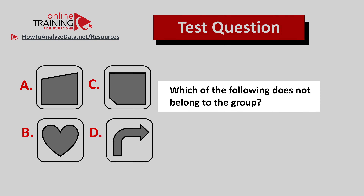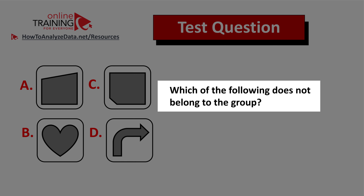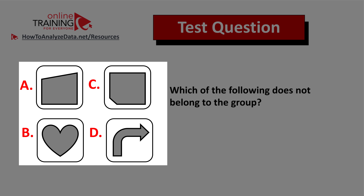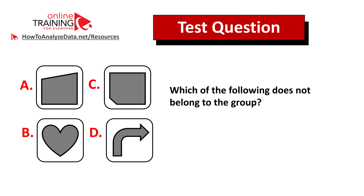Now here's a question for you to try: which of the following does not belong to the group? You're presented with four different rounded squares, each one has a shape inside — choices A, B, C, and D. My tip: always look for patterns. Give yourself 10 to 15 seconds. If you've figured out the answer, please post it in the comment section so I can give you feedback.